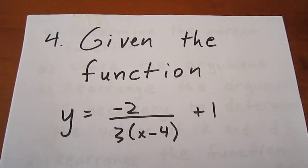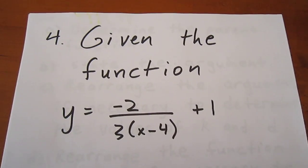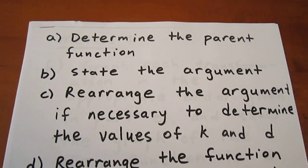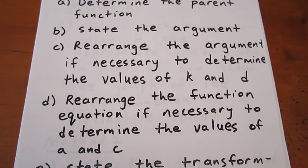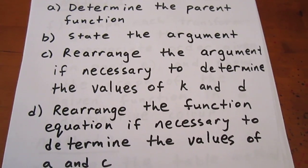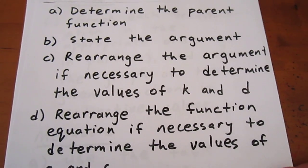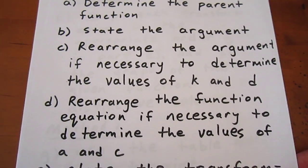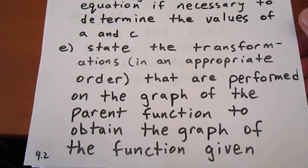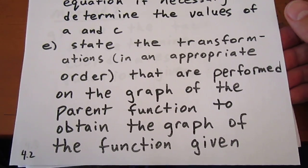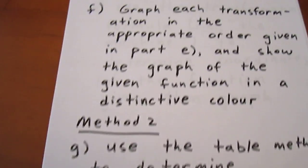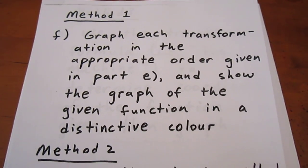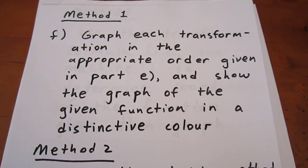For our next question, we're given the function y equals negative 2 over 3, quantity x minus 4, and then that quantity plus 1. We're asked to graph that, but to follow certain procedures first: determine the parent function, state the argument, rearrange the argument if necessary to determine the values of k and d — the variables that affect horizontal transformations — then rearrange the function equation if necessary to determine values of a and c, the variables that indicate vertical transformations. Then we'll state the transformations in an appropriate order, and finally graph the curve using three different methods, showing each transformation visually.